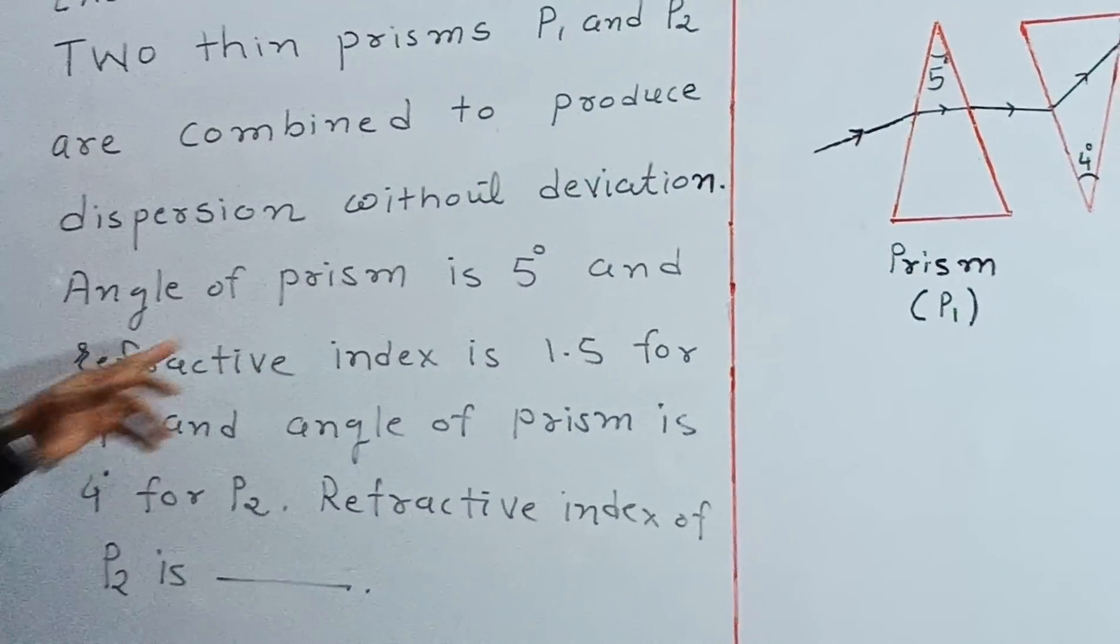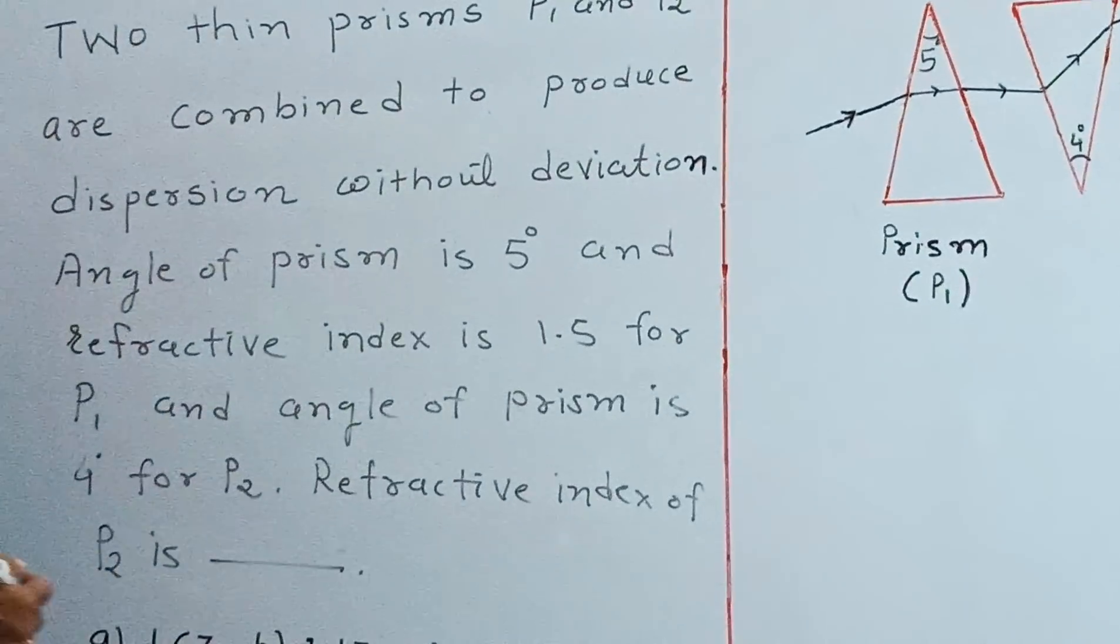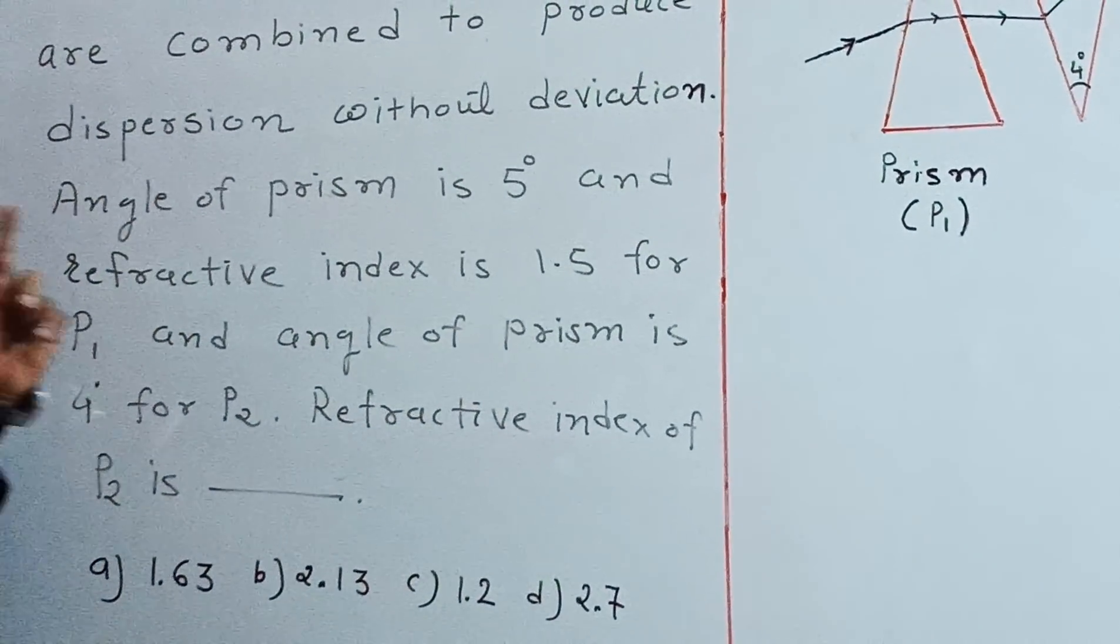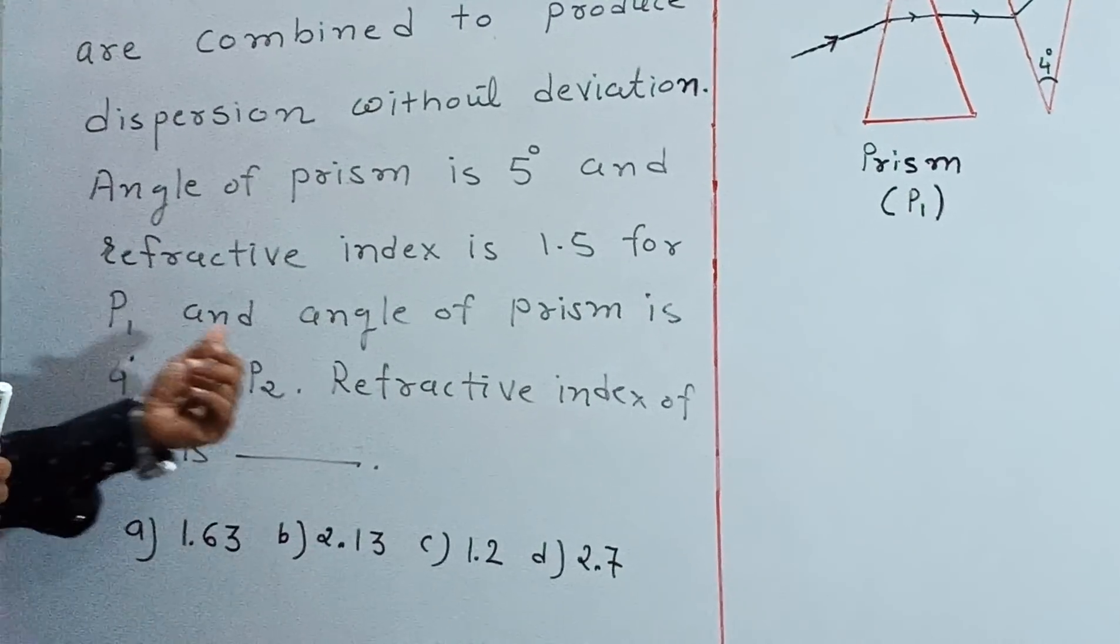Angle of prism is 5 degrees for P1 and refractive index is 1.5 for P1, and the angle of prism is 4 degrees for P2.